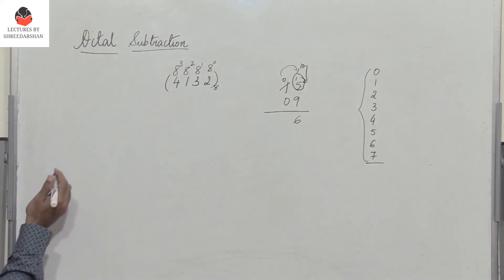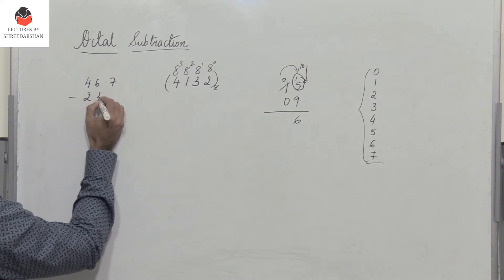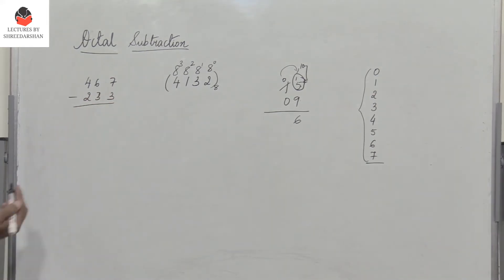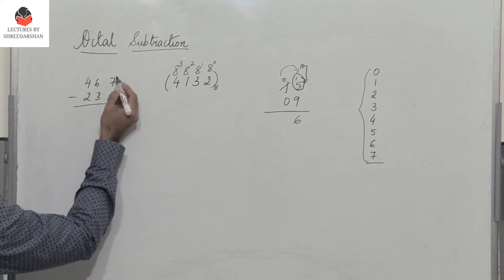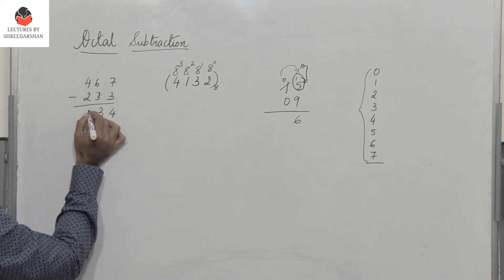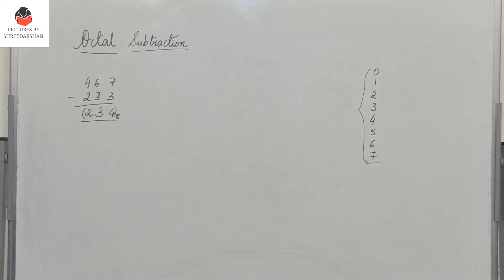So let's take the first example. 467 minus 233. So here is a case where there is no borrow because all the digits, so 7 is greater than 3. So 7 minus 3 is 4, 6 minus 3 is 3, 4 minus 2 is 2. So this is the answer. So since there is no borrow here, it's very simple.